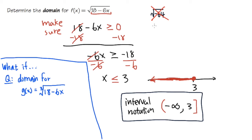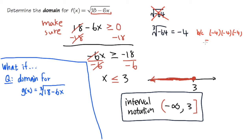But can we take the cube root of a negative number? For example, ∛(-64) — yes, we can. The answer is negative 4. Because negative 4 times negative 4 times negative 4: negative 4 × negative 4 = positive 16, times negative 4 again = negative 64. So the cube root of a negative number is actually doable.